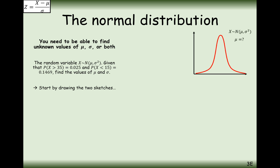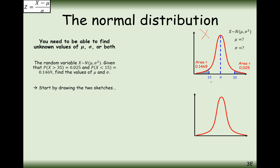Drawing two sketches — one of your X distribution, one of your Z distribution. We know P(X > 35) = 0.025 and P(X < 15) = 0.1469, so the mean must lie between 15 and 35. On the standard normal distribution we need to find the corresponding markers, though we don't yet know where they are — we'll use the calculator or percentage points table.